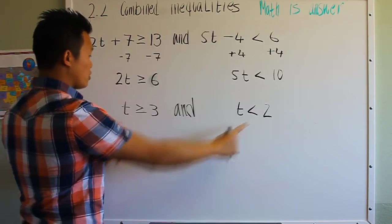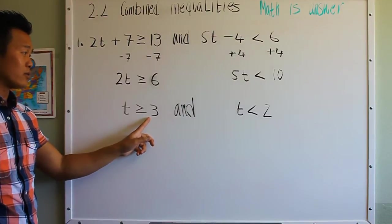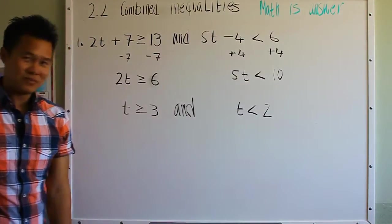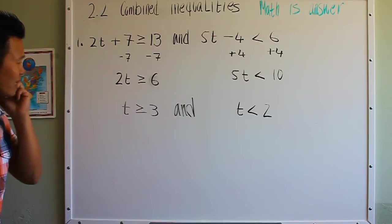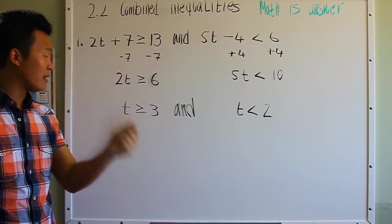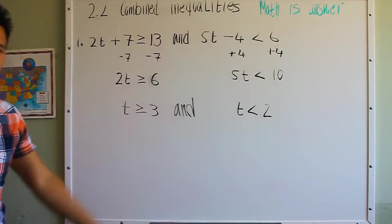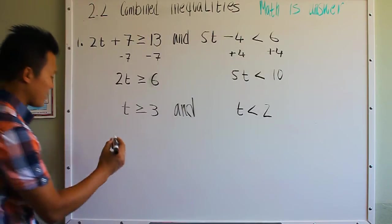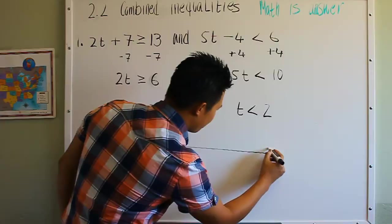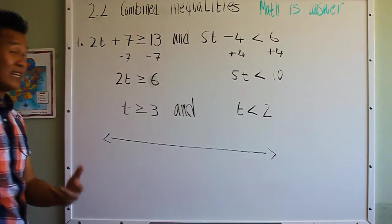So your solution is anything that's bigger than or equal to 3 and less than 2. If you look carefully, anything that's bigger than or equal to 3 and less than 2 — let's see how the solution looks graphically. When we graph the solutions, we look for the intersection.